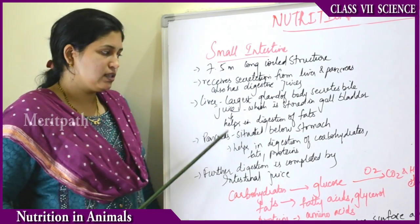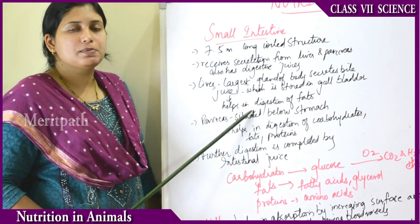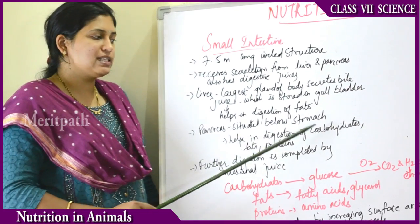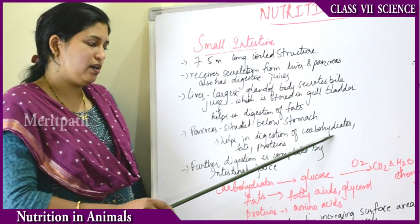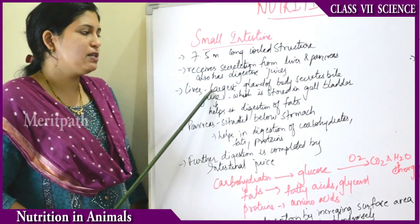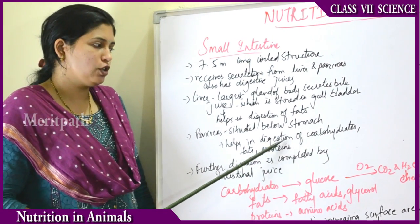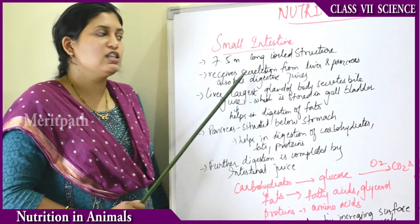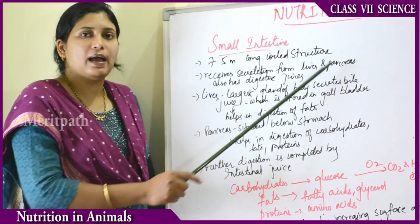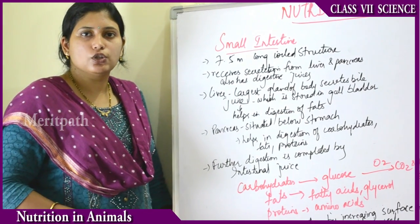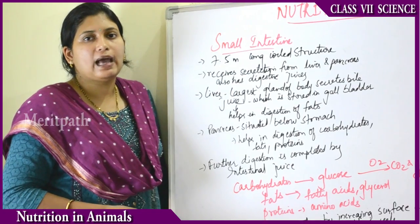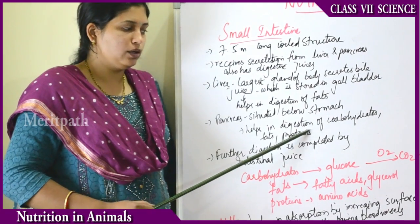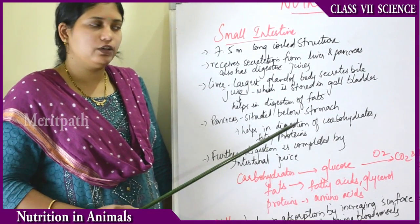Moving on to the pancreas: the pancreas are situated below the stomach and help in digestion of carbohydrates, fats, and proteins. So liver helps in digestion of fats, while pancreas help with carbohydrates, fats, and proteins. The small intestine receives secretions from both liver and pancreas. The pancreas have structures called islets of Langerhans, which secrete insulin. This insulin also helps in some part of digestion.